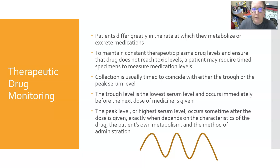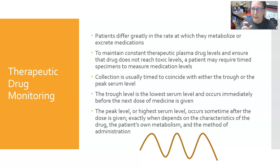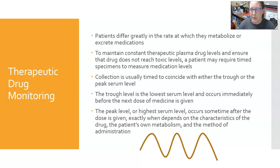With therapeutic drug monitoring, part of the reason it's done is that for specific drugs there is a very small window between therapeutic and toxic. Patients differ greatly in the rate at which they metabolize or excrete medications. To maintain constant therapeutic plasma drug levels and make sure the drug does not become toxic, the patient may require timed specimens to measure medication levels and potentially adjust dosage.